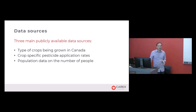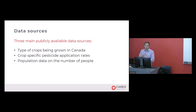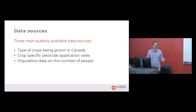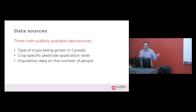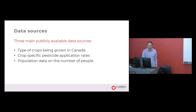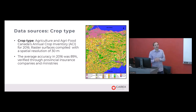The study used three different publicly available datasets. First, crop type data: the Annual Crop Inventory from Agriculture and Agri-Food Canada, which is a spatial raster dataset at 30-metre resolution — each pixel represents a 30m × 30m area — covering all crop types grown across Canada. This is verified annually through provincial insurance companies and provincial ministries of agriculture, achieving about 89.4% accuracy for 2016, typically ranging between 88–90% accuracy each year.